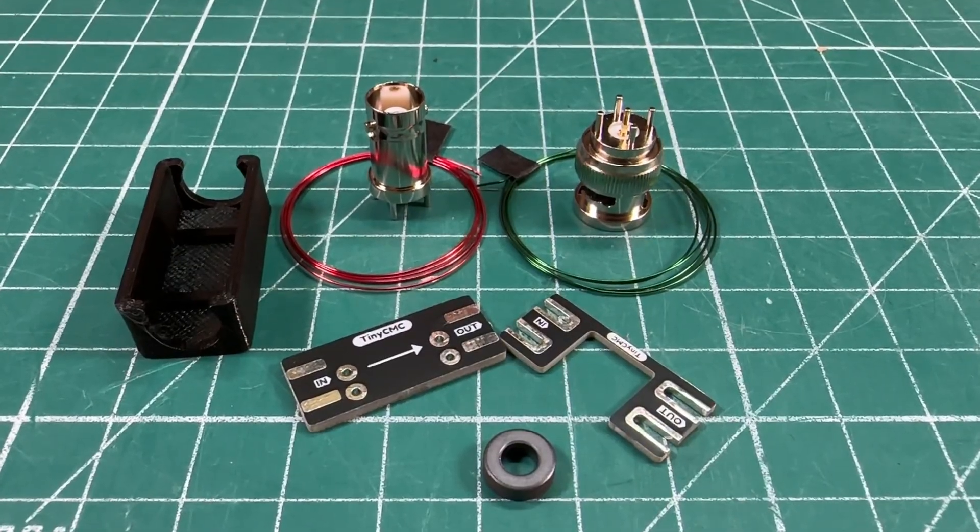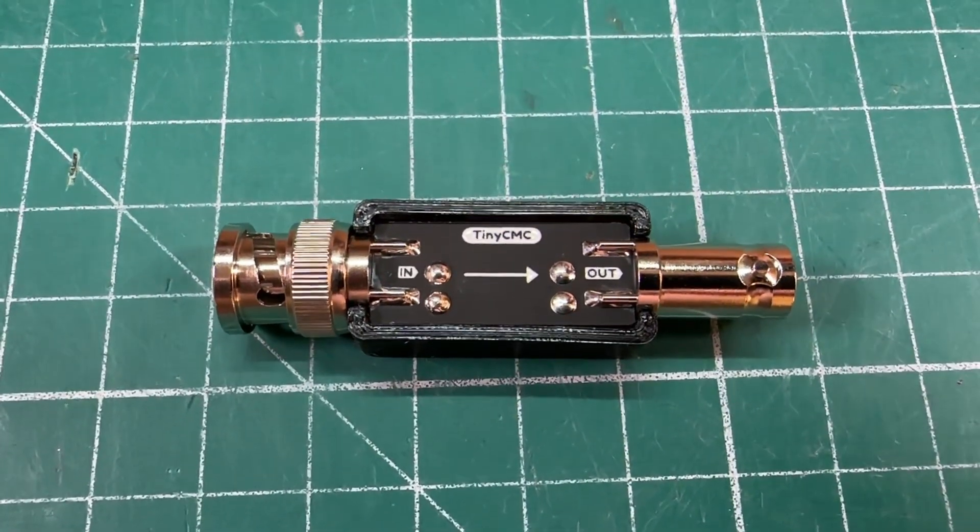Today we're going to take this small pile of parts and turn it into this awesome 10 to 80 meter five watt common mode choke from N6ARA. My name is Mike K8MRD, and this is Ham Radio Tube.